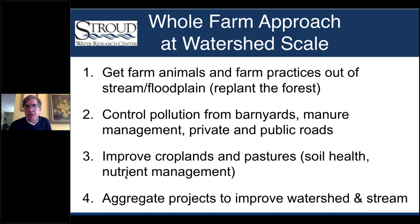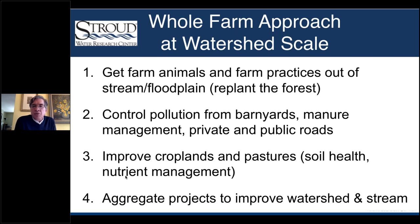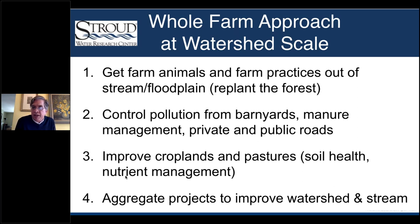At the Stroud Center — and I give credit to the restoration team and our partnership with the Chesapeake Bay Foundation — it's a whole-farm approach at a watershed scale. There are four steps: first, get animals and farm practices out of the stream and floodplain, then replant with native forest. Second, control pollution from barnyards, manure management infrastructure, and private and public roads — remember there's a stormwater problem on the farm. Third, improve your croplands and pastures — that's a soil health and nutrient management question covering the vast majority of the landscape. Finally, you need aggregation: improving the watershed can't be one farm out of 20 — it takes 75% or more of farms all doing their best.